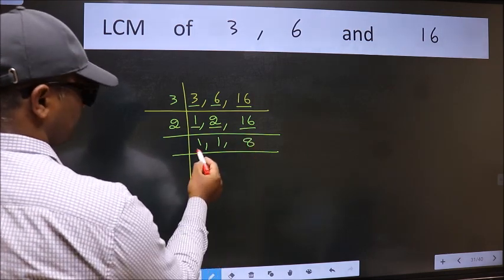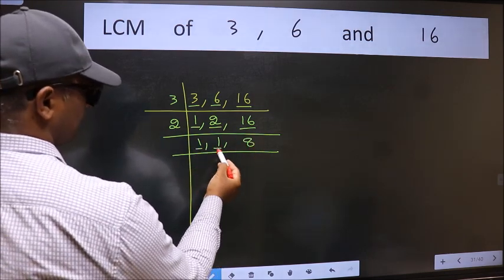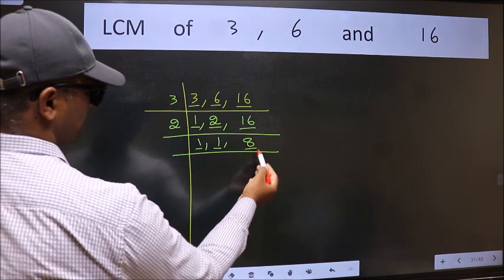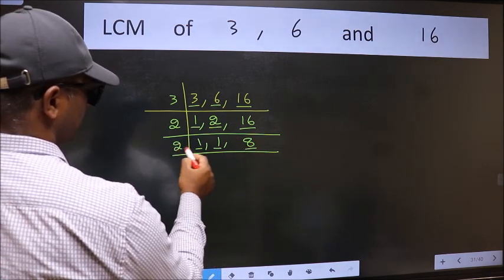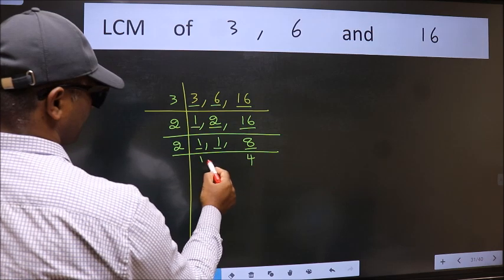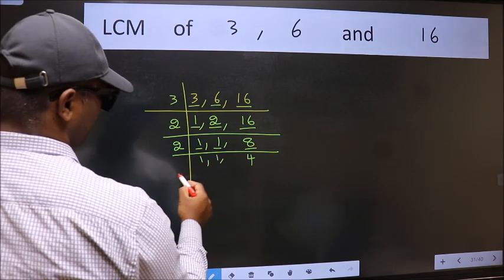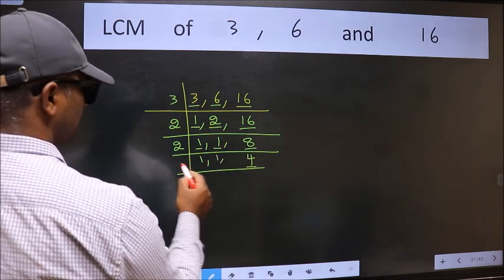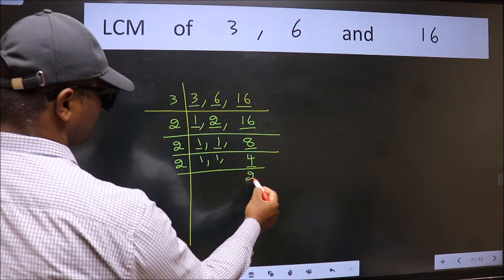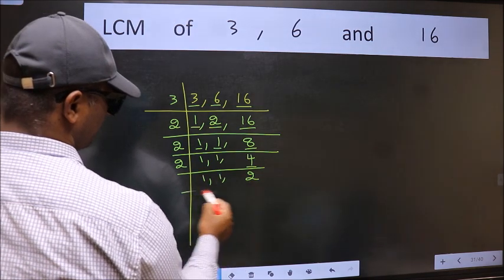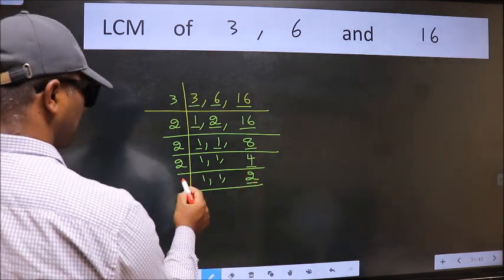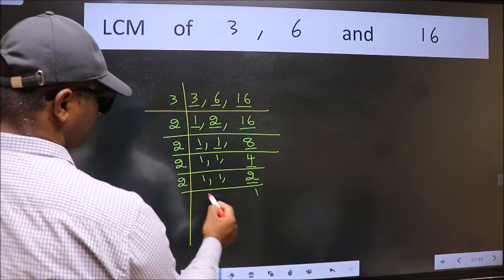Now we got 1 here and here, so focus on the next number, 8. 8 is 2 times 4. Now here we have 4. 4 is 2 times 2. Now we have 2. 2 is a prime number, so 2 divided by 2 gives 1.